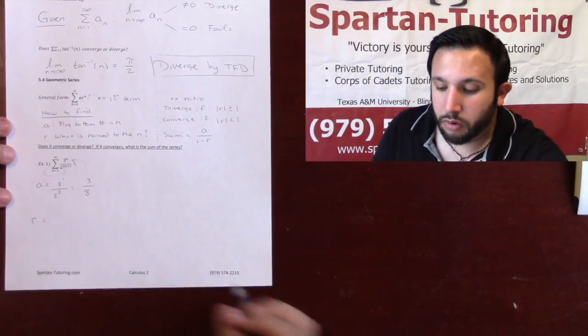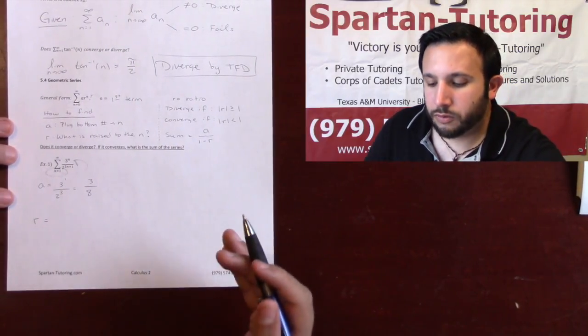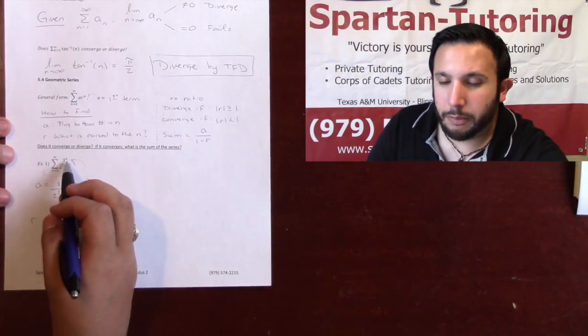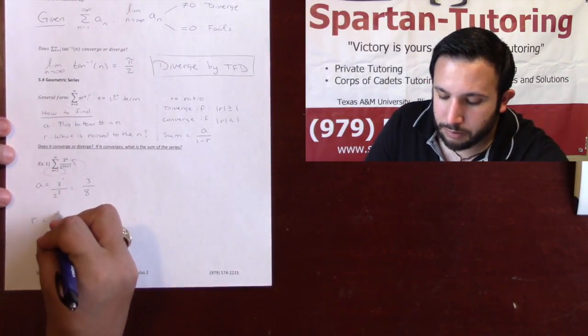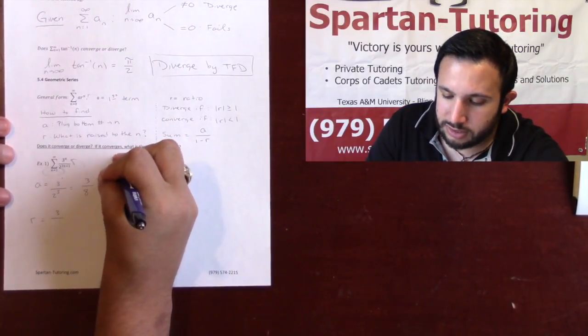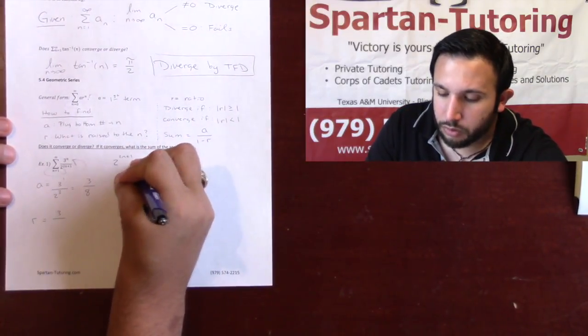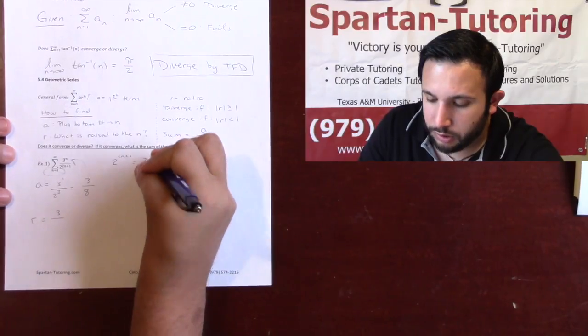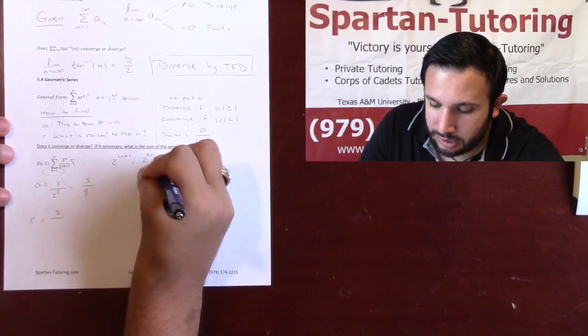Now let's talk about my r. Now r is what's being raised to the n. And on top, I have a 3 being raised to the n. So on top, I'm going to put a 3. But on bottom, be careful. Let's take a look at this 2 to the 2n plus 1. Well, 2 to the 2n plus 1, I can rewrite this as 2 to the 2n times 2, right?